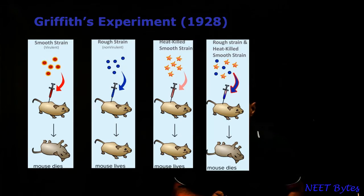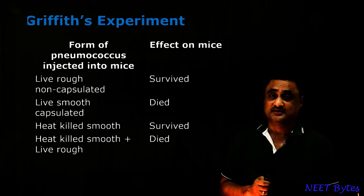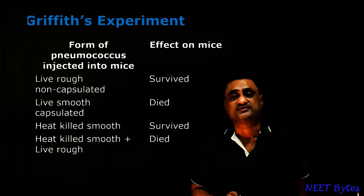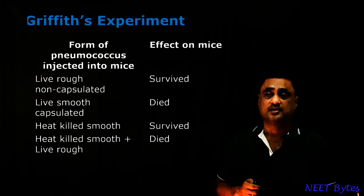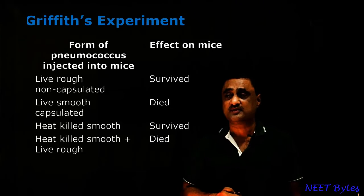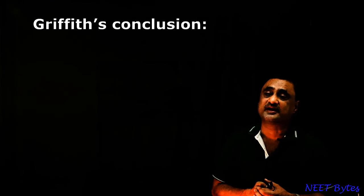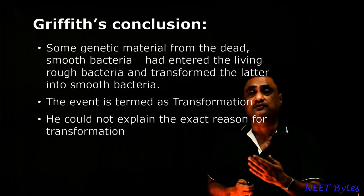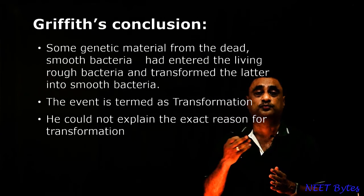Unfortunately, he could not explain the reason for this event, but he called it a transformation. To sum up: when we give the live rough form, the mouse survived; when we give the live smooth form, the mouse died; when we give the heat-killed smooth form, the mouse survived again; but in the case of heat-killed smooth form plus rough form, the mouse died. He could not explain the reason, and the event was called transformation. In the eyes of Griffith, the very conversion of the rough form into smooth form is what is called transformation.